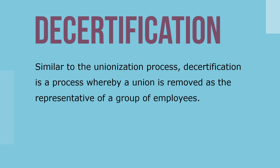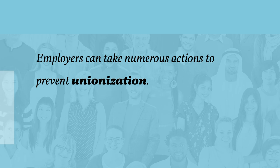If members no longer wish to be represented by a union, they can use the election process to sever the relationship between themselves and the union. Similar to the unionization process, decertification is a process whereby a union is removed as a representative of a group of employees. Employees attempting to oust a union must obtain decertification authorization cards signed by at least 30% of employees in the bargaining unit before an election may be held. If a majority of those voting in the election vote to remove the union, the decertification effort succeeds.